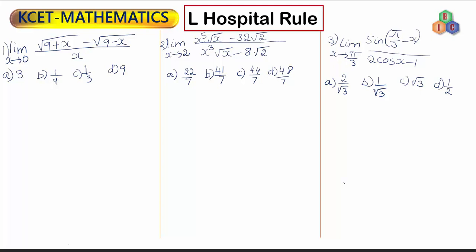There are four options given: 3, 1 by 9, 1 by 3, and 9. This is a problem based on L'Hôpital's rule, and to use L'Hôpital's rule you just have to differentiate the numerator and denominator separately.